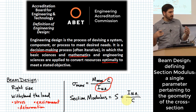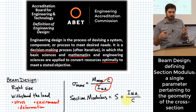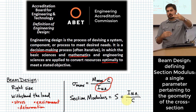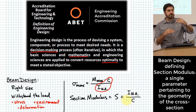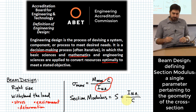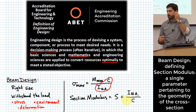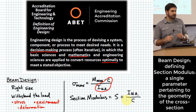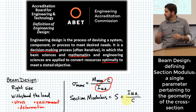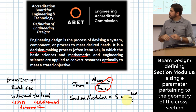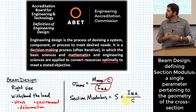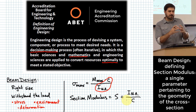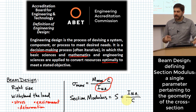Section modulus is purely a function of the cross section of the beam. It gives us one number we can look up in a table of different beam choices for a particular application, and we can compare which beam might be stronger than another. Everything related to the cross section has been boiled down into one parameter called section modulus.